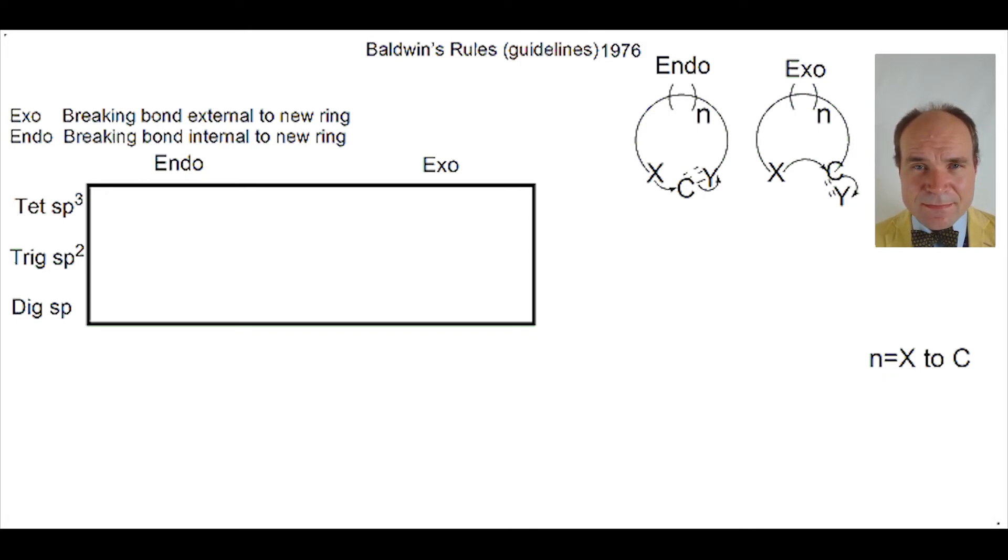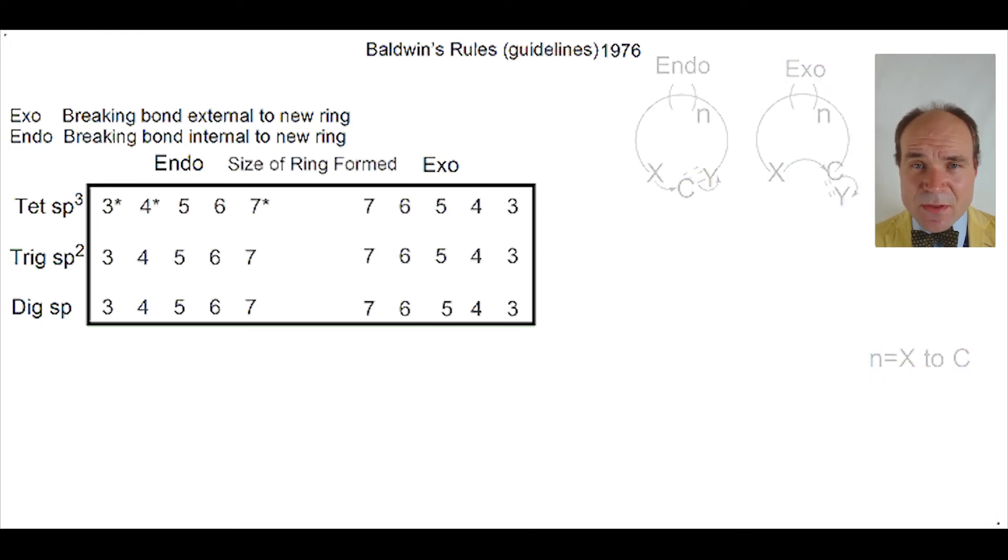The final factor is the size of the ring that would potentially be formed. Baldwin looked at three-membered rings, four-membered rings, five-membered rings, six-membered rings and finally seven-membered rings.